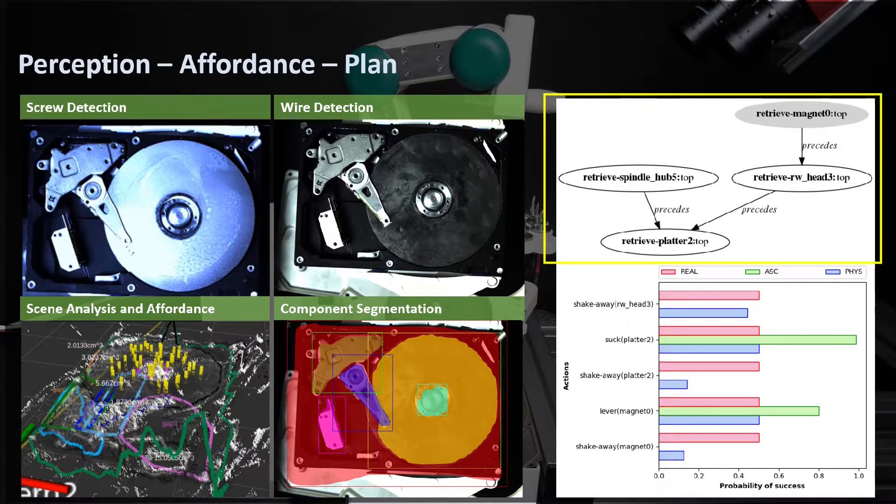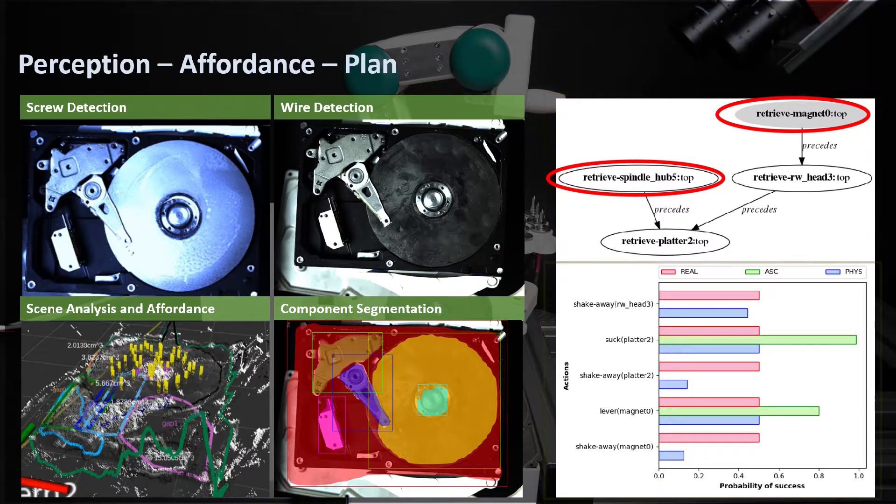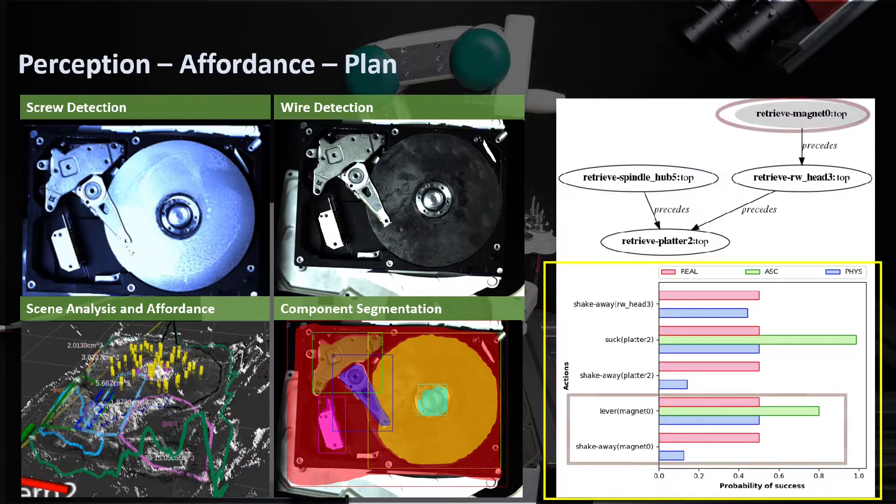The precedence diagram represents an abstraction made by the planner of an observation directly extracted from perception. This indicates that the magnet and the spindle hub are not preceded by other parts and can be removed first. The diagram below shows the probability of success of each action, which shows the viable action for the spindle hub and two viable but ambiguous actions for the magnet.